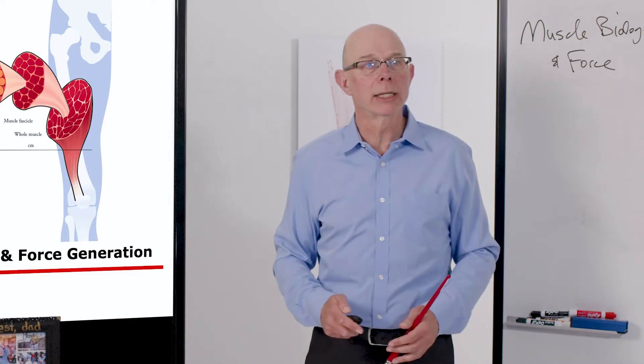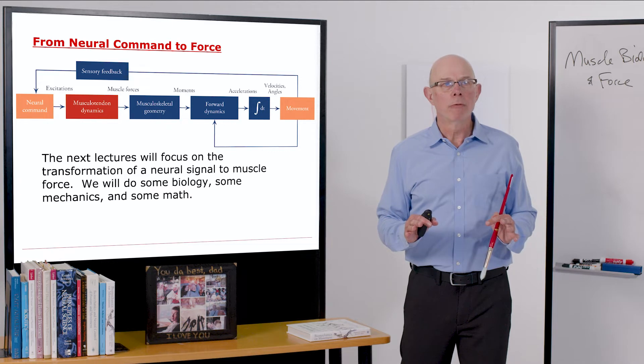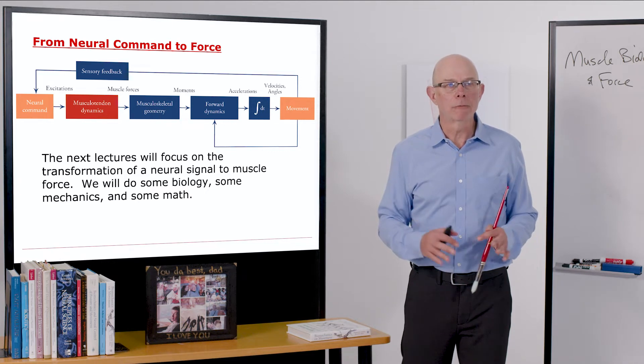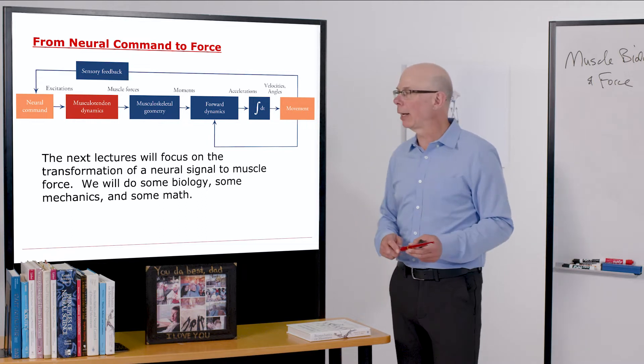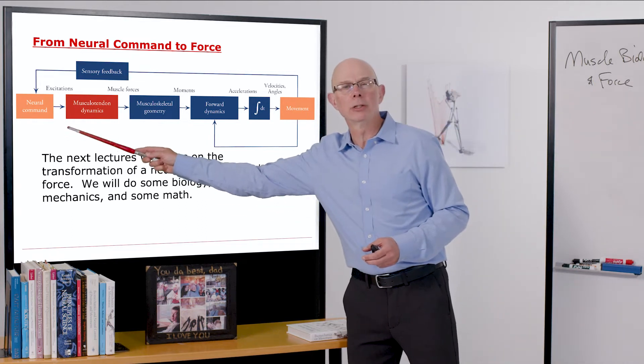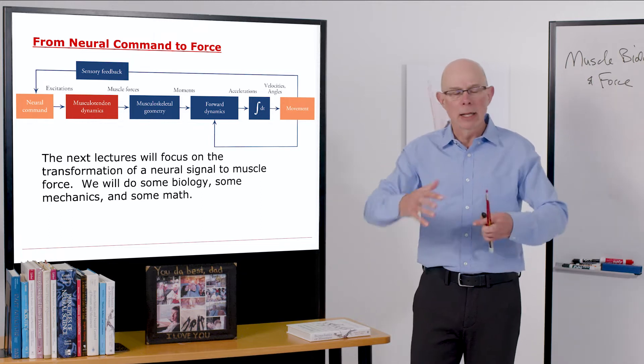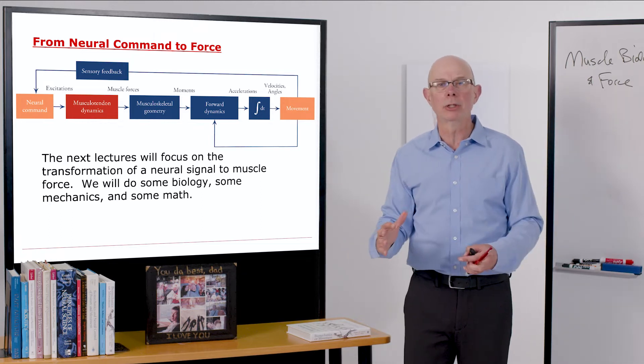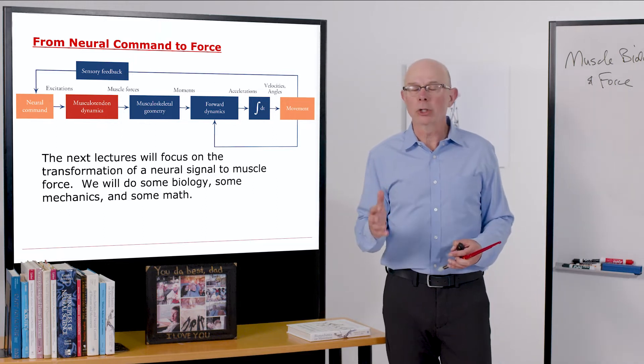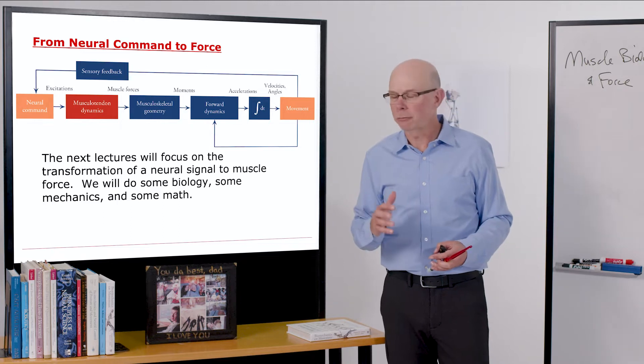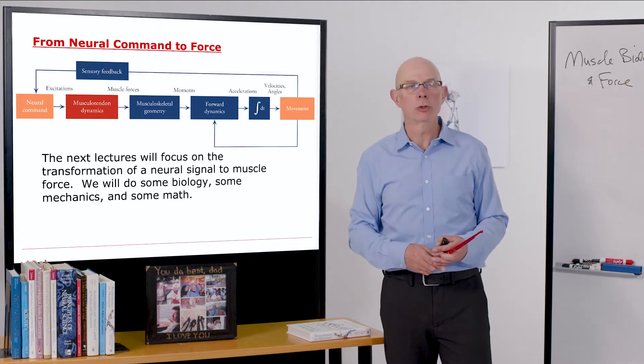The big picture is this. We're going to start with the transformation from neural command to force. One of the most tricky things we do in biomechanics is try to estimate what the neural command is. What signals is your brain sending down your spinal cord and out to muscles to generate force? In the next lectures, we'll focus on this transformation from neural command to muscle force. We'll do some biology, we'll do some mechanics, and we'll do some math.